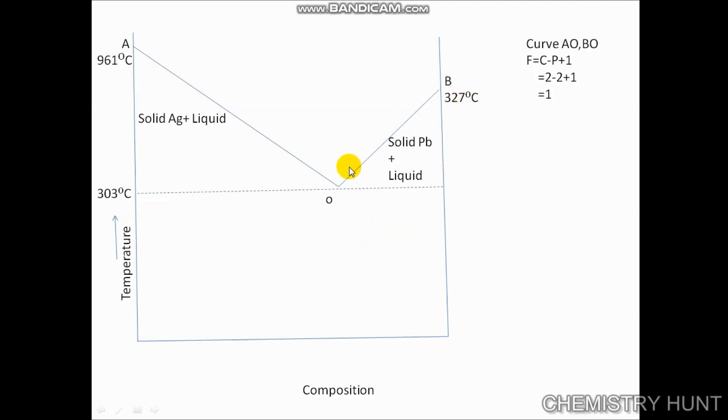The second point we see is called BO, where the lead starts melting at 327 degrees Celsius and gets saturated with the silver.